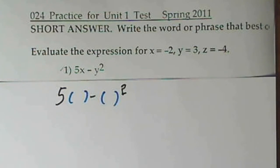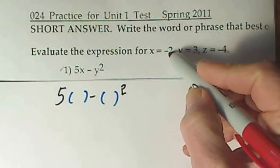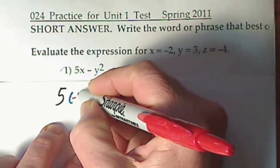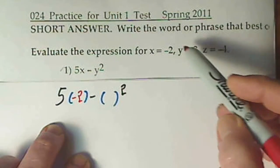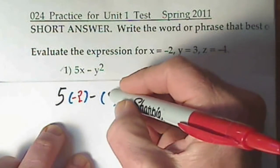Now you just see what values you're given. X is negative 2, so I'll put a negative 2 right here. And we have, let's see, y is a 3, so you simply put in your 3.